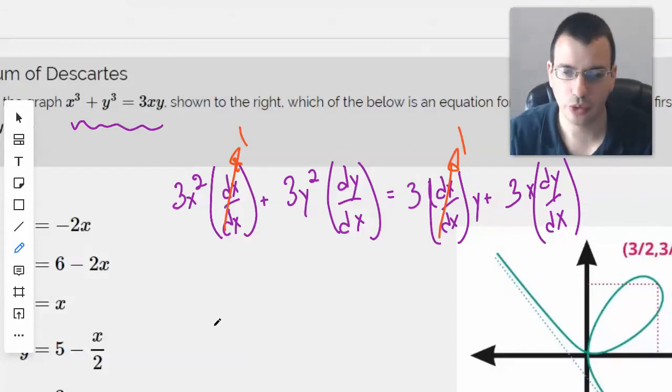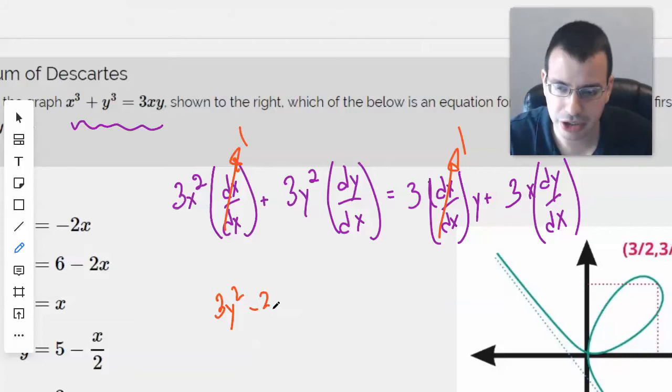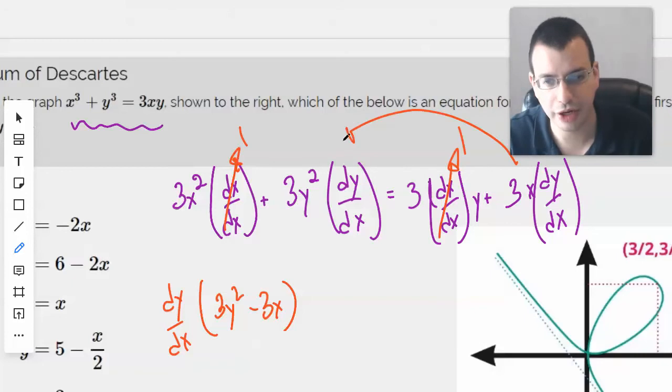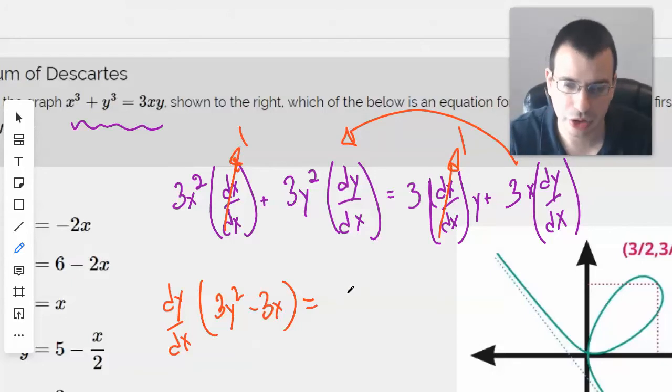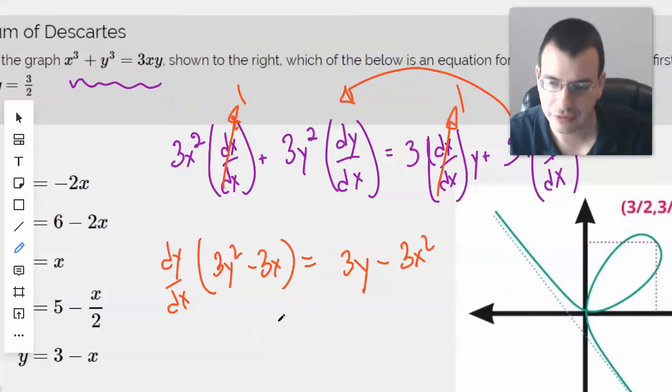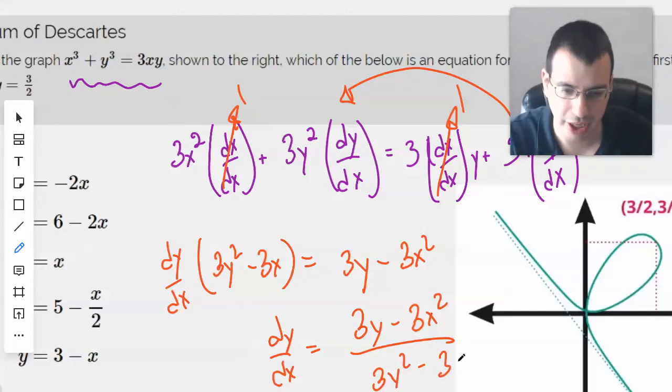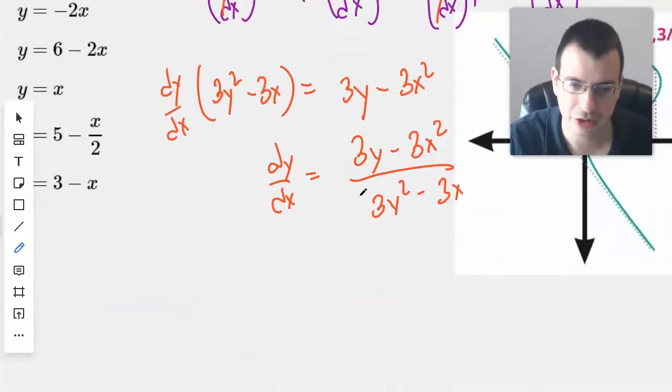Now I'm going to get all the dy dx's off to one side. So we'll have 3y squared minus 3x dy dx. I took this right here, moved it over there. Equals 3y minus 3x squared. Seems reasonable. And then solving for dy dx, we get 3y minus 3x squared over 3y squared minus 3x. This looks pretty symmetrical.